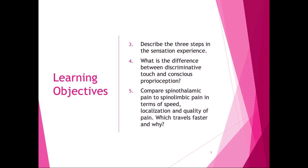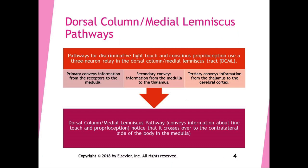The dorsal column medial lemniscus pathway is like the sciatic nerve — as soon as it crosses the knee it becomes the tibial nerve; you're still on the same road but it changes names. Similarly, you're traveling along on the dorsal column and when you reach the brainstem it becomes the medial lemniscus. That's why it's called the dorsal column medial lemniscus pathway, or DCML for short.